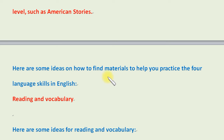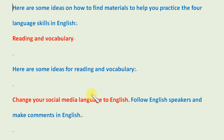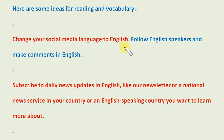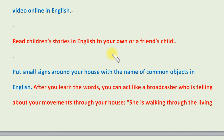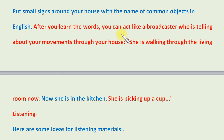Here are some ideas on how to find materials to help you practice the four language skills in English. For reading and vocabulary: change your social media language to English. Follow English speakers and make comments in English. Subscribe to daily news updates in English, like our newsletter or a national news service in your country or an English-speaking country you want to learn more about. If you're cooking something new, find a recipe in English to follow, or watch a cooking video online in English. Read children's stories in English to your own or a friend's child. Put small signs around your house with the name of common objects in English. After you learn the words, you can act like a broadcaster who is telling about your movements through your house.